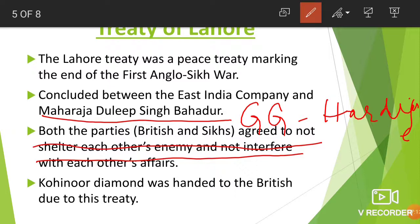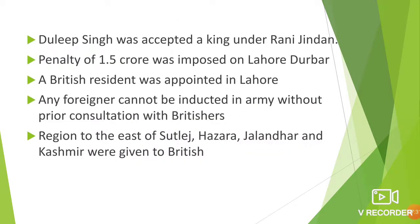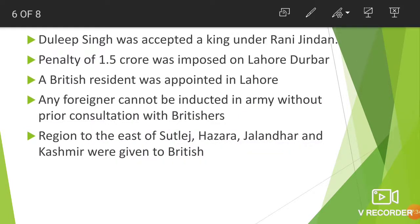Due to the Treaty of Lahore, the Kohinoor diamond was handed over to the Britishers. As per the Treaty of Lahore, the Britishers accepted Dalip Singh as king under his mother Rani Jindankar. At that time, Maharaja Dalip Singh was around 7 years old, and he was accepted as King under Rani Jindankar.